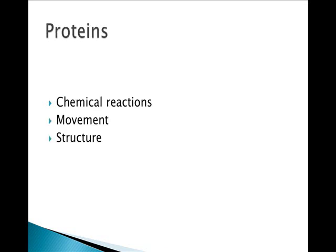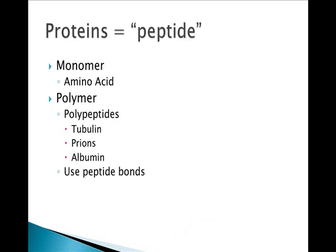The third macromolecule is proteins. Proteins function in chemical reactions as enzymes, help in cell movement, and also help to provide structure. The suffix for proteins is called a peptide, referring to the specific type of bond — a carbon-to-nitrogen bond called the peptide bond — which is unique to proteins. The monomer unit for proteins is an amino acid. The polymer is called a polypeptide, formed again by dehydration synthesis, which results in that carbon-to-nitrogen peptide bond.